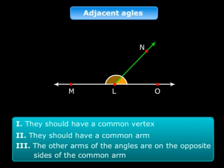LN is the common arm, that is the second condition. And the other arms LM and LO lie on the opposite side of the common arm LN. So these two angles are adjacent angles as well.